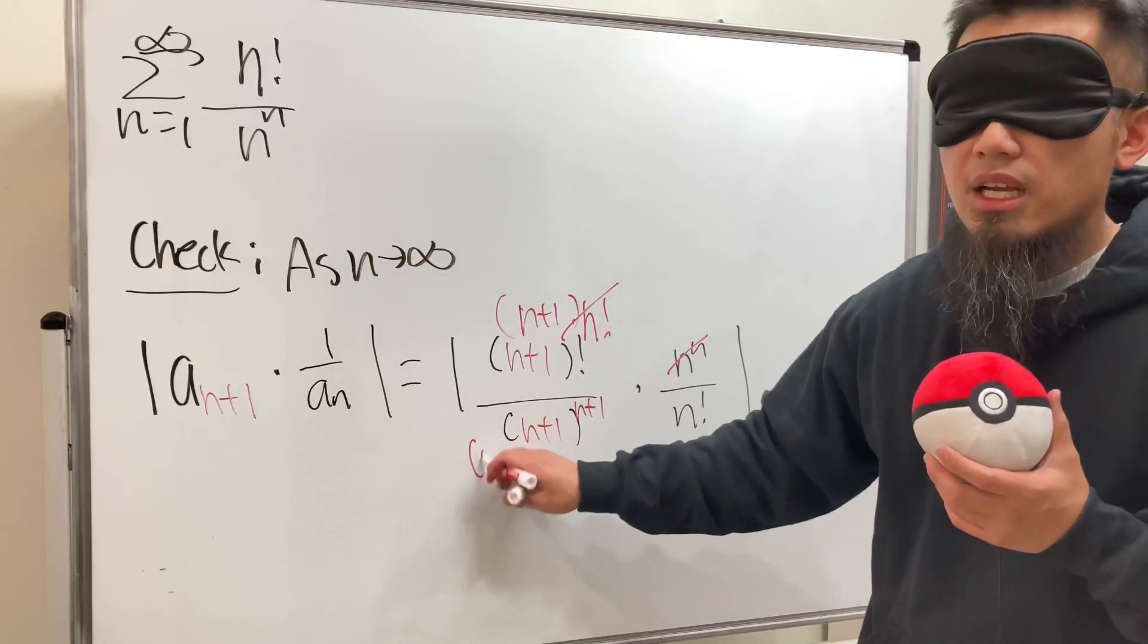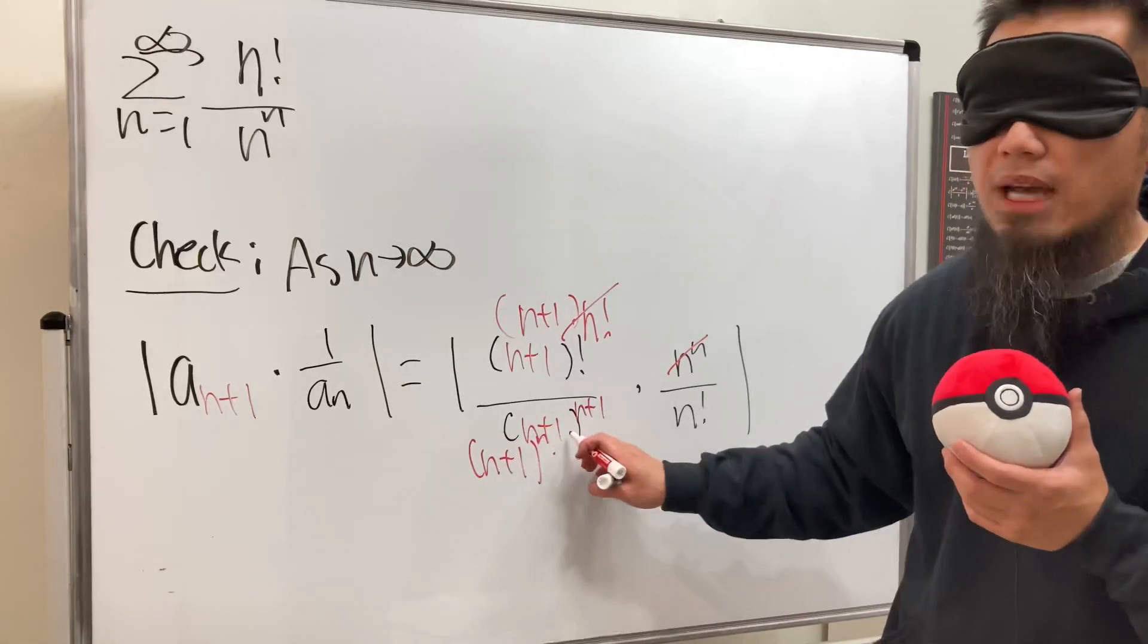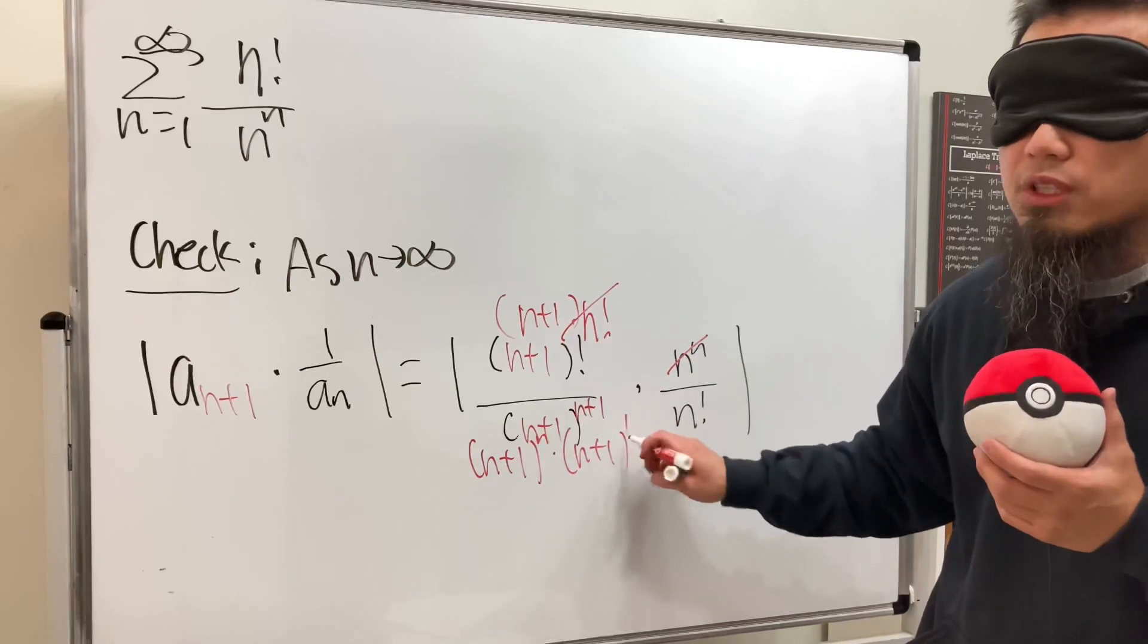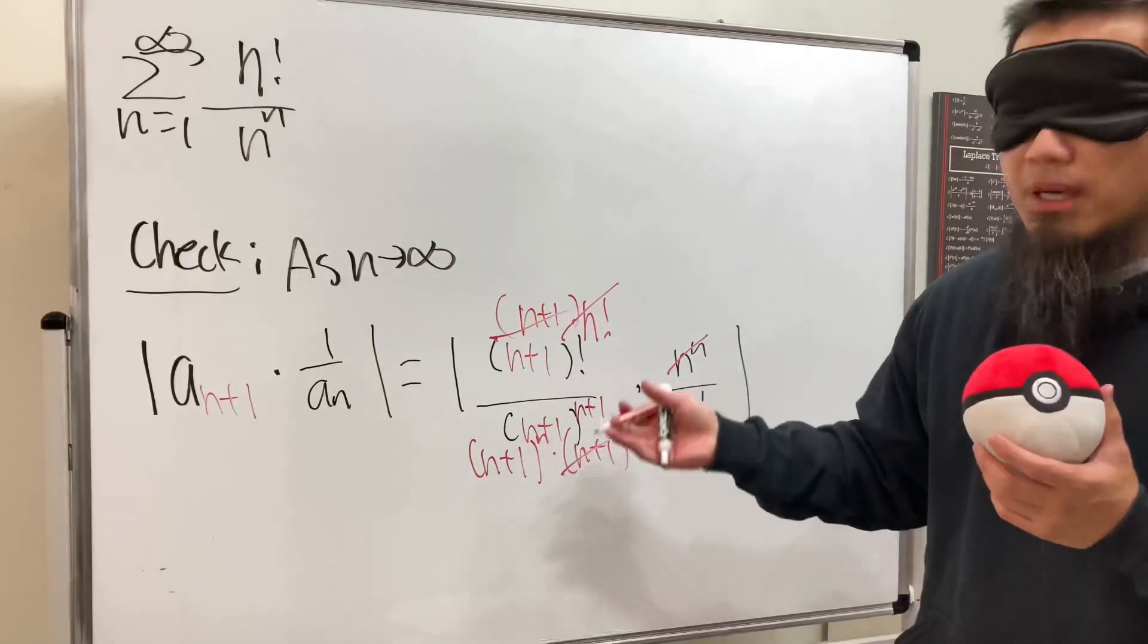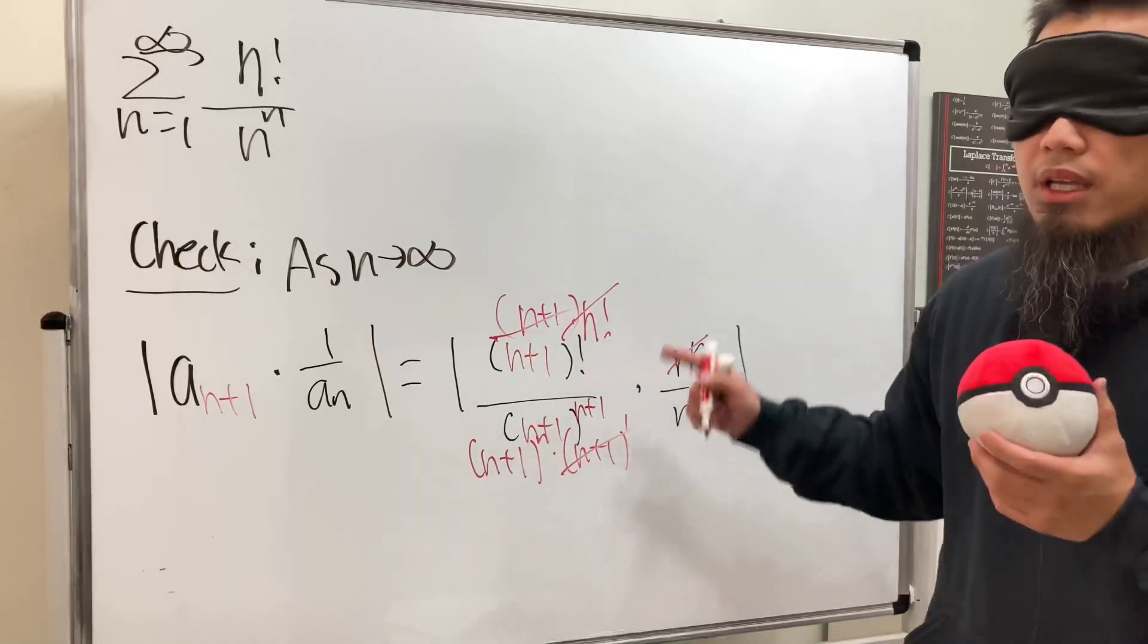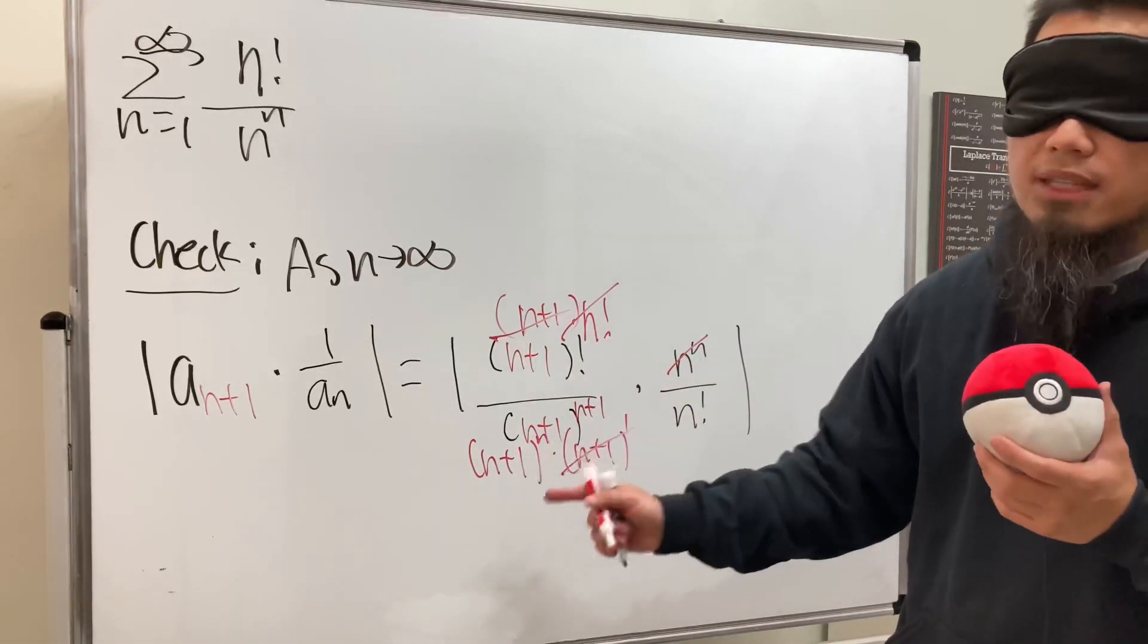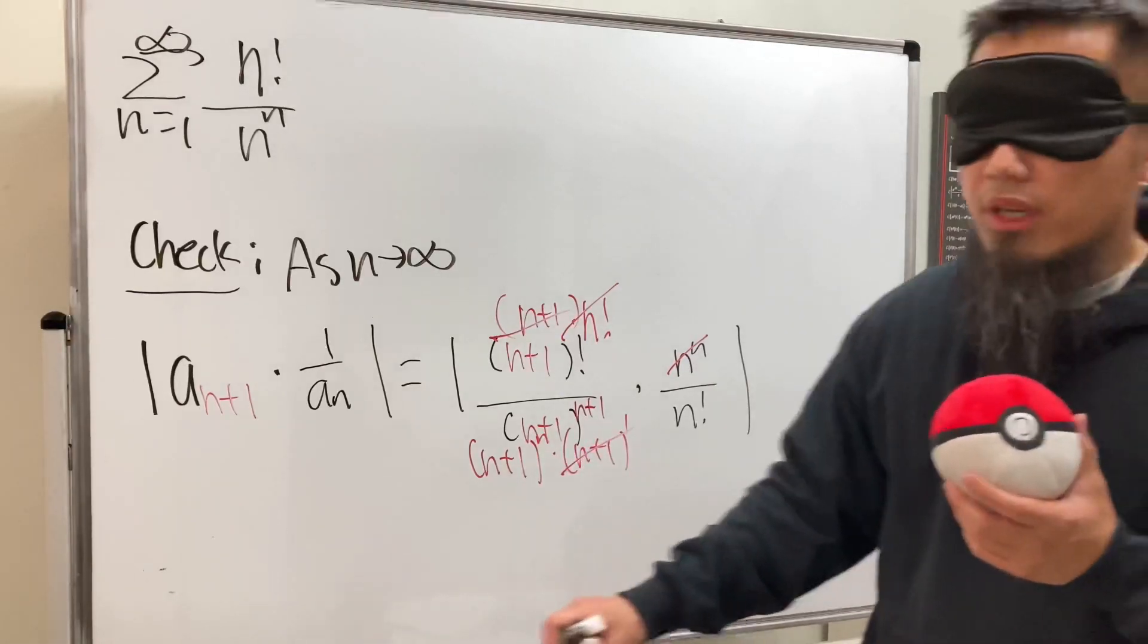On the bottom, we can use the rule of exponent and we can get (n+1) to the nth power times (n+1) to the first power, and this and that can be cancelled. Very nice. Everything is positive so we don't need the absolute value anymore. This is n to the n and this is (n+1) to the nth power.